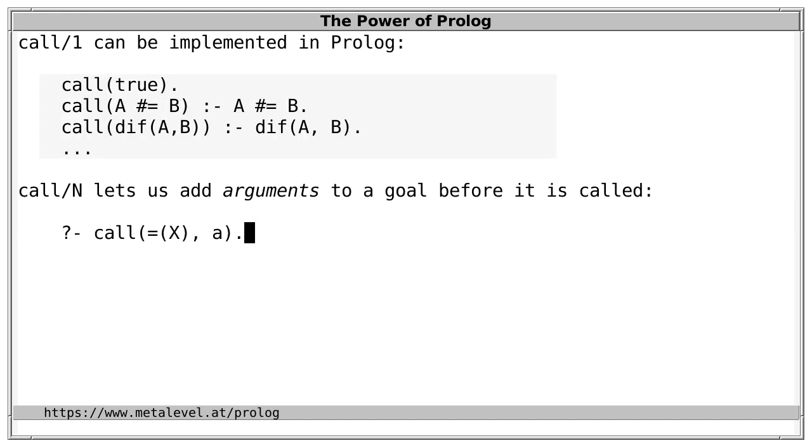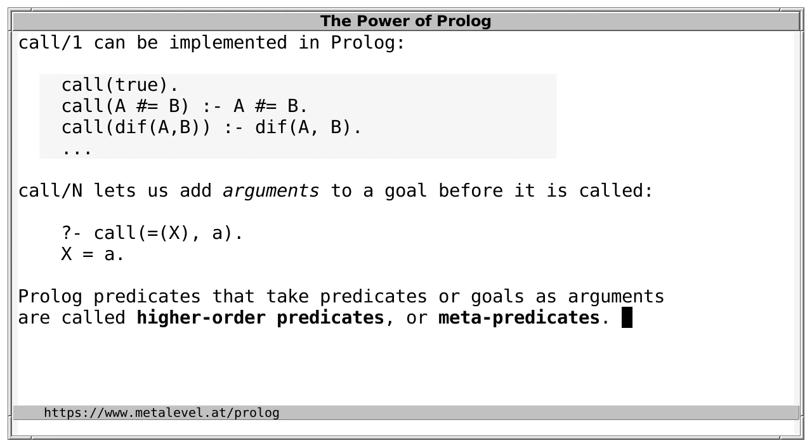And the call/N family of predicates even goes beyond this in that it lets us add arguments to a goal before it is called. So, when we post this for example, we see from the answer that this is equivalent to x equals a. So, we see that the argument a was added to the partial goal. And Prolog predicates that take predicates or goals as arguments are called higher order predicates or metapredicates. So, this answers the original question what a metapredicate is.